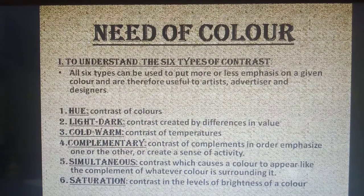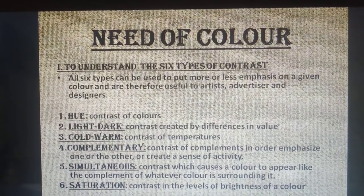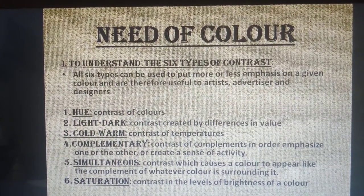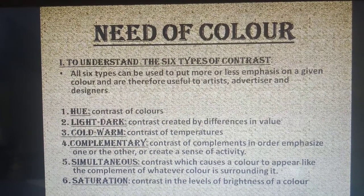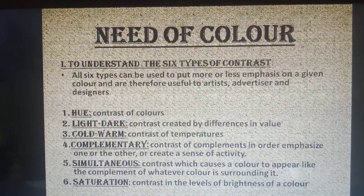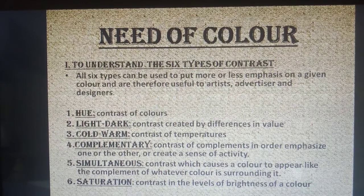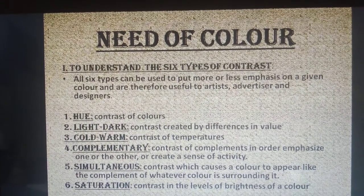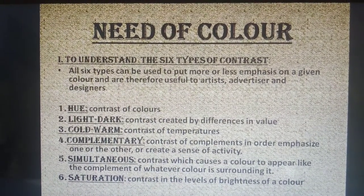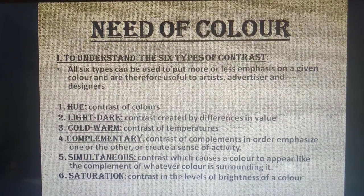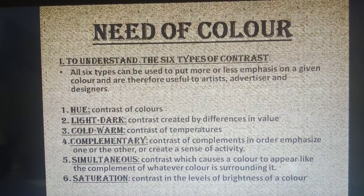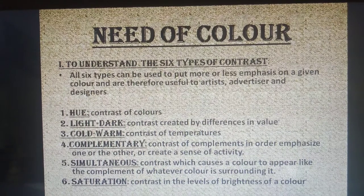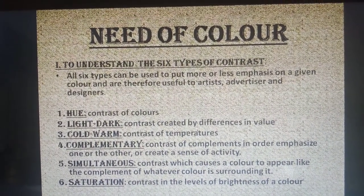5th is simultaneous contrast, यानि समकालीन — contrast which causes a color to appear like the complement of whatever color is surrounding it. रंग को उसके आसपास के रंगों की समकक्ष complement करता है। 6th is saturation, यानि संतृप्ति — it represents the intensity of the color. Contrast in the level of brightness of the color is shown here — जो रंग कितना bright है और कितना dull है, इससे उसकी saturation को अधिक या कम किया जा सकता है।